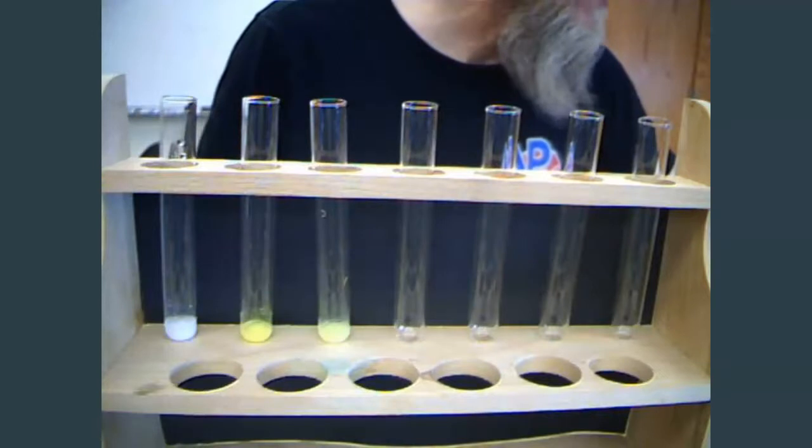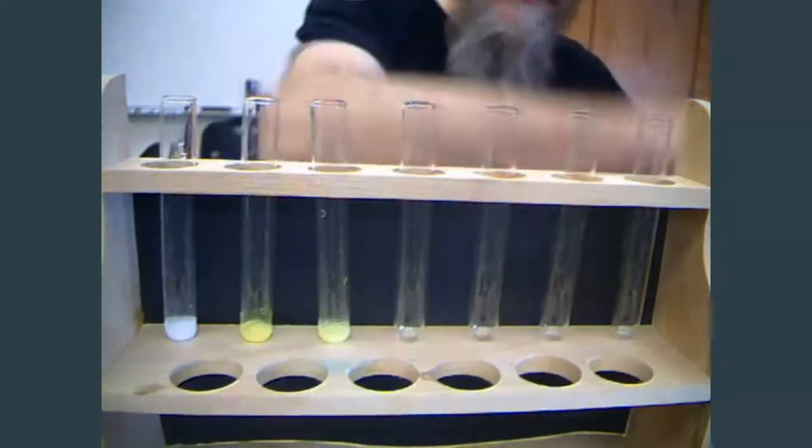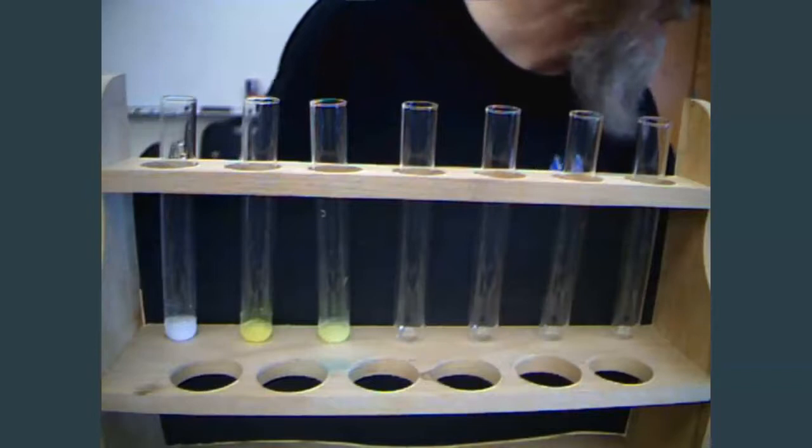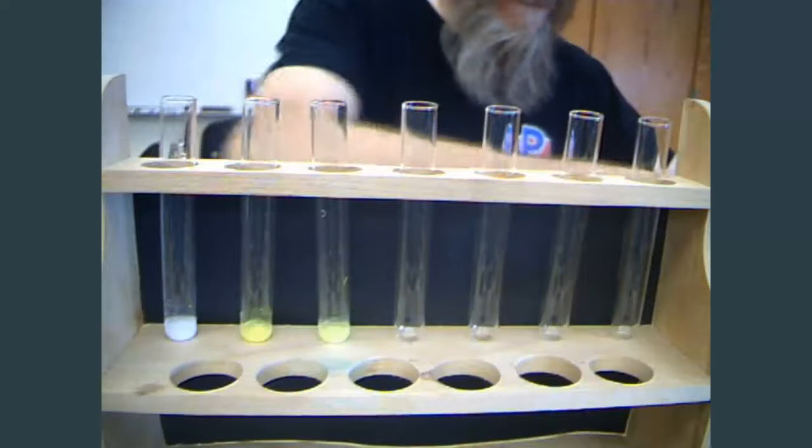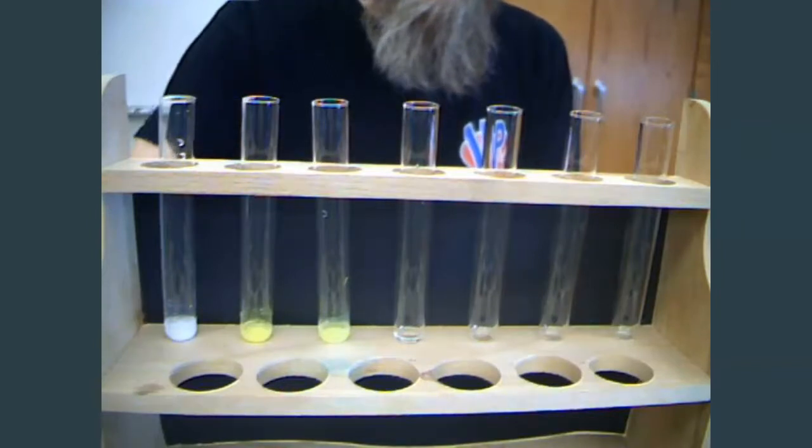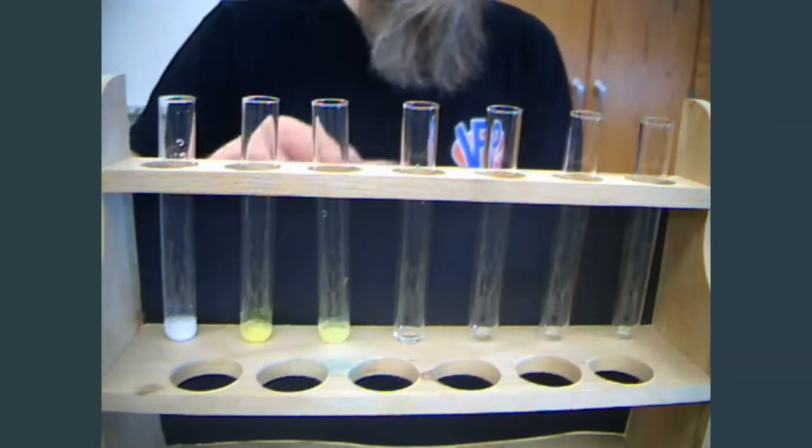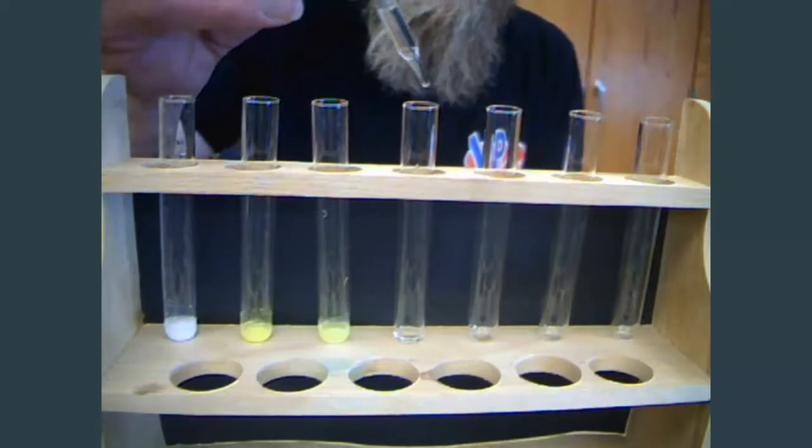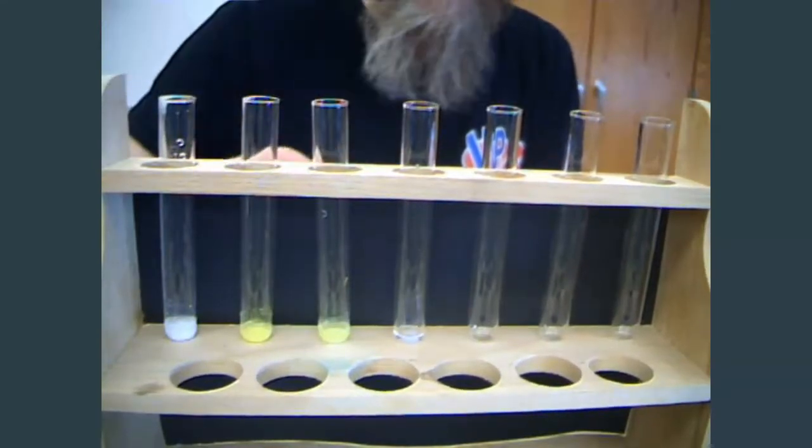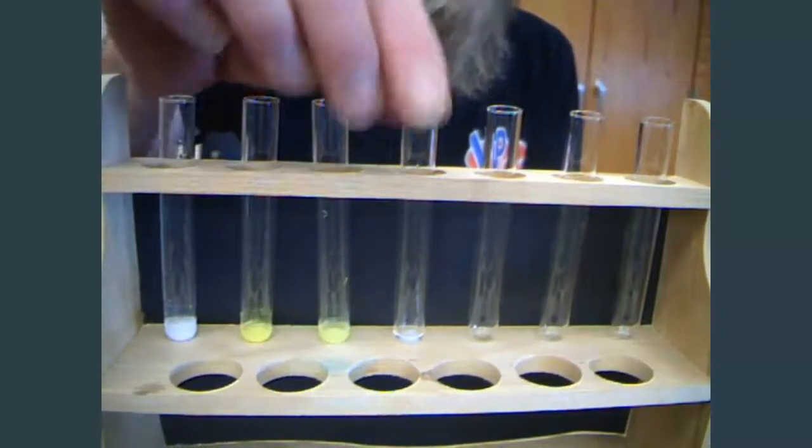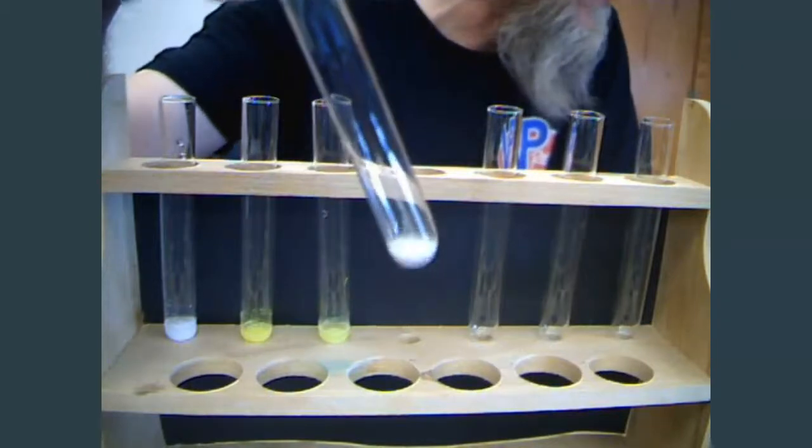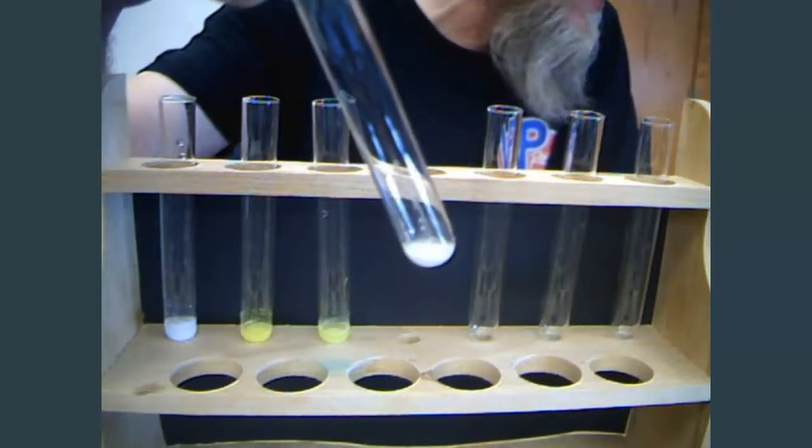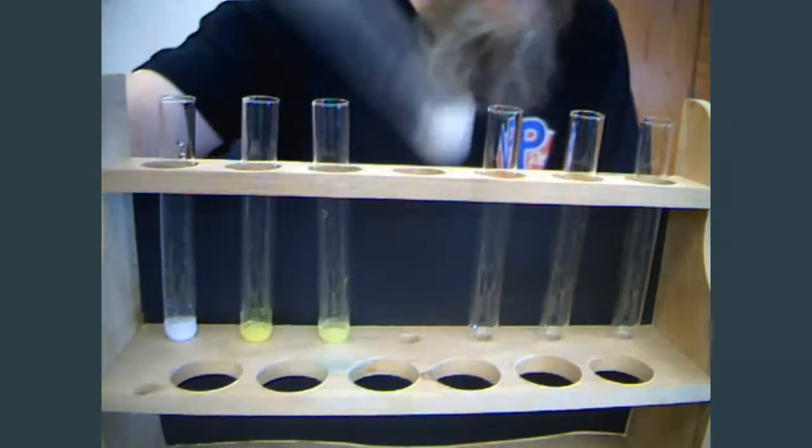We're up to number 11. So we have sodium carbonate and lead nitrate. Put a little sodium carbonate and a couple drops of lead nitrate. And indeed we can see there is definitely a precipitate there. It's reaction 11 between sodium carbonate and lead nitrate. And yes, there is a white precipitate.